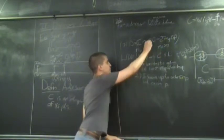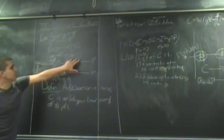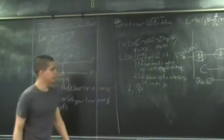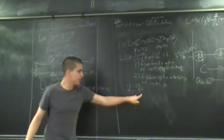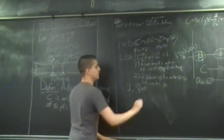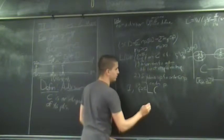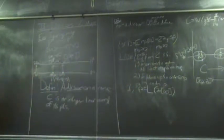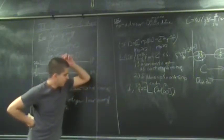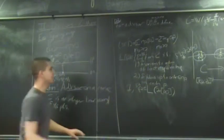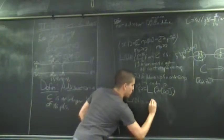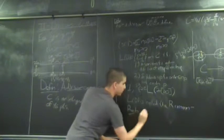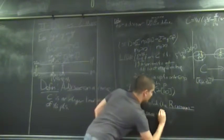Both of the functions that show up as coordinates of our map — the constant 1 and S²/T² — are in the vector space associated to the divisor 2·∞, which was the thing we got by pulling back the point at infinity. One has no poles or zeros anywhere; S²/T² has a pole of order 2 at infinity. So both are in the Riemann-Roch space of that divisor. This space L(D) is called the Riemann-Roch space of D.